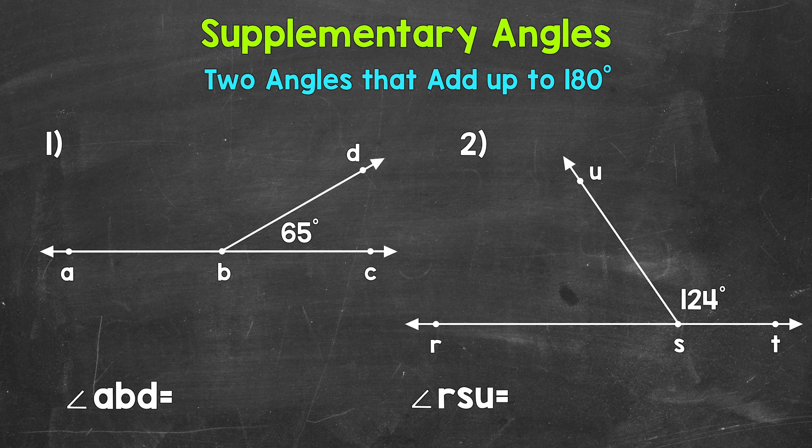For number one, we have a given angle measure of 65 degrees. So angle DBC equals 65 degrees. We need to find the missing or unknown angle. We are going to look for angle ABD. Now we know that the sum of these two angles is going to be 180 degrees.